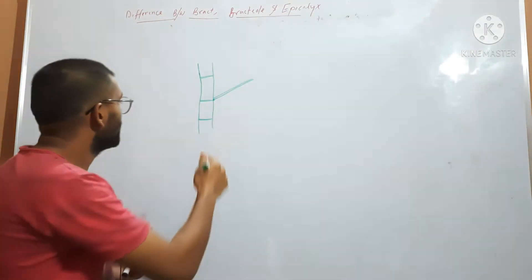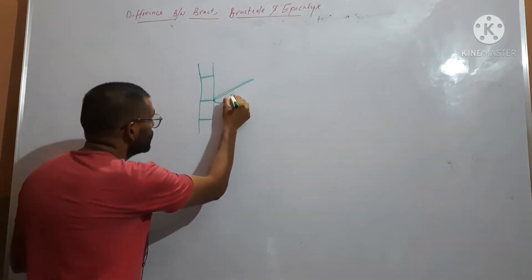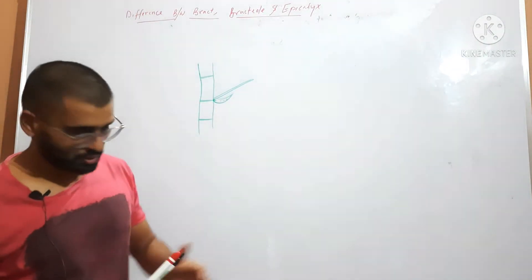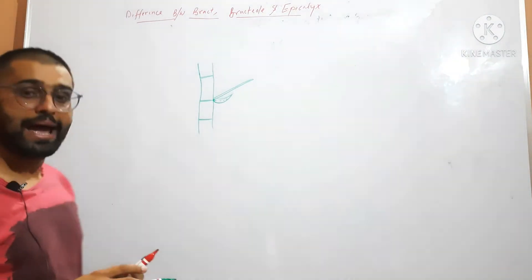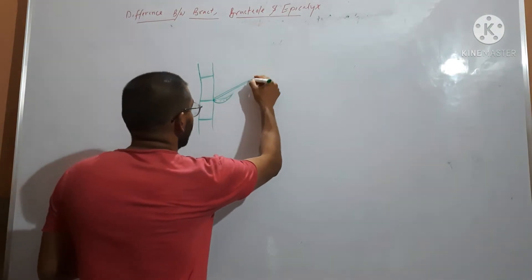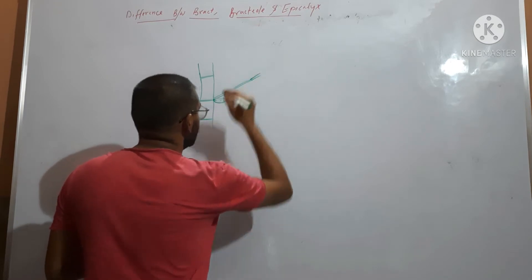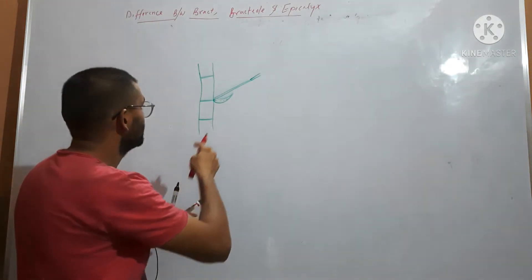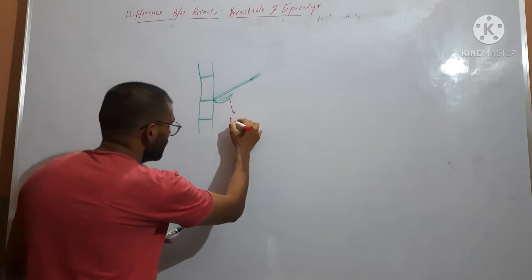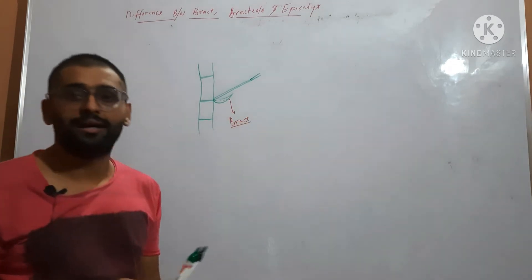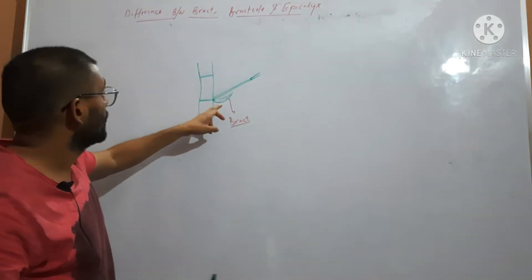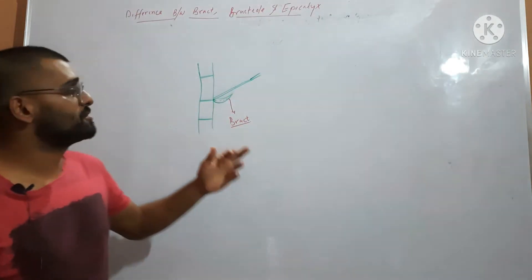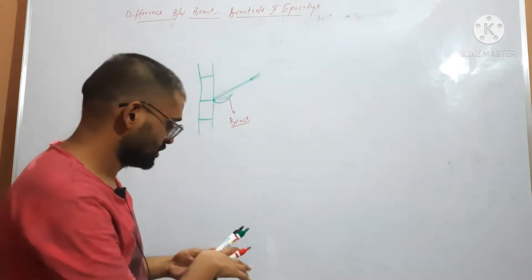From where does a floral branch arise? The floral branch arises from the axil of a leaf-like structure. And this leaf-like structure, from whose axil the floral branch arises, is called a bract. So, bract is the leaf-like structure from the axil of which a floral branch or flower arises. This is a floral branch.